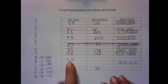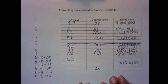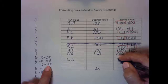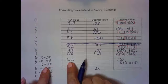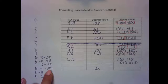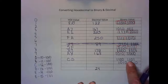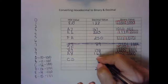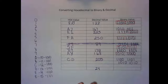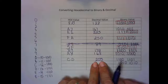Now we want to take the hex value of CD and figure out the decimal and binary equivalents. C is 12 and D is 13. So we have 192 plus 12 plus 1, which is 205. The hex value CD has a decimal equivalent of 205.